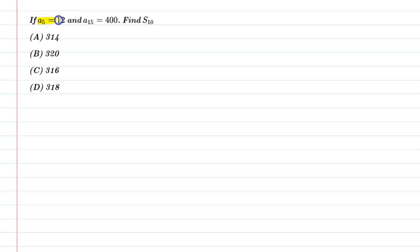So the question is if A5 is 12 and A15 is 400, then find S10. So let's start. How many questions are given? A5, that is 5th term which is 12, and A15 which is 15th term which is 400. And what do we find? S10, which is sum of 10 terms.